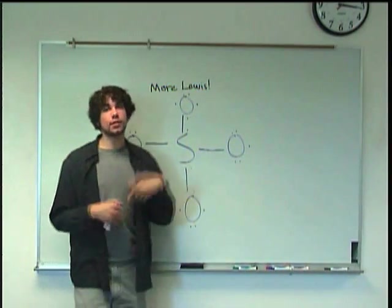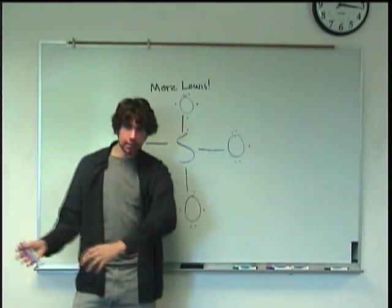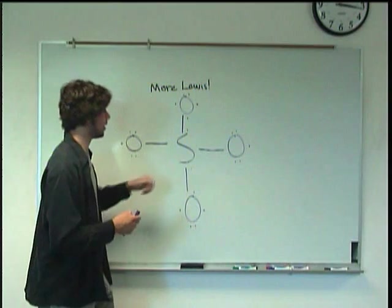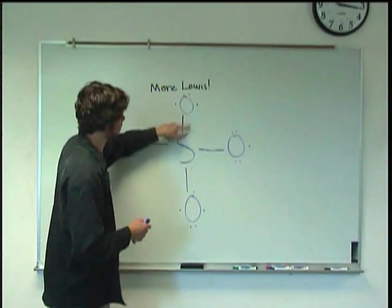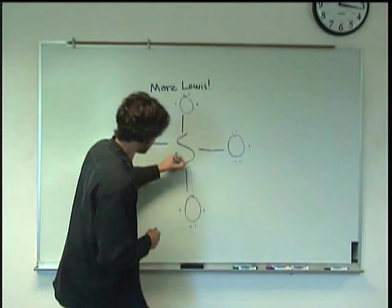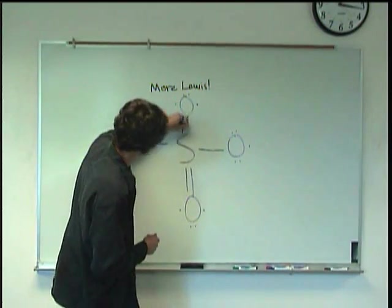And remember what I said about sulfur since it's passed phosphorus, it can violate the octet rule. So what that means is that we can go ahead and add two more bonds to the sulfur. Just like this.